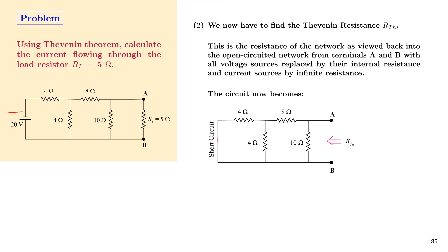In the original circuit, the 20V supply has no stated internal resistance, so we place a short in its place. RTH is then calculated looking into the circuit from terminals A and B. The 4 ohm and 4 ohm resistors are in parallel, and this parallel combination is in series with the 8 ohm resistor. That entire combination is in parallel with the 10 ohm resistor.